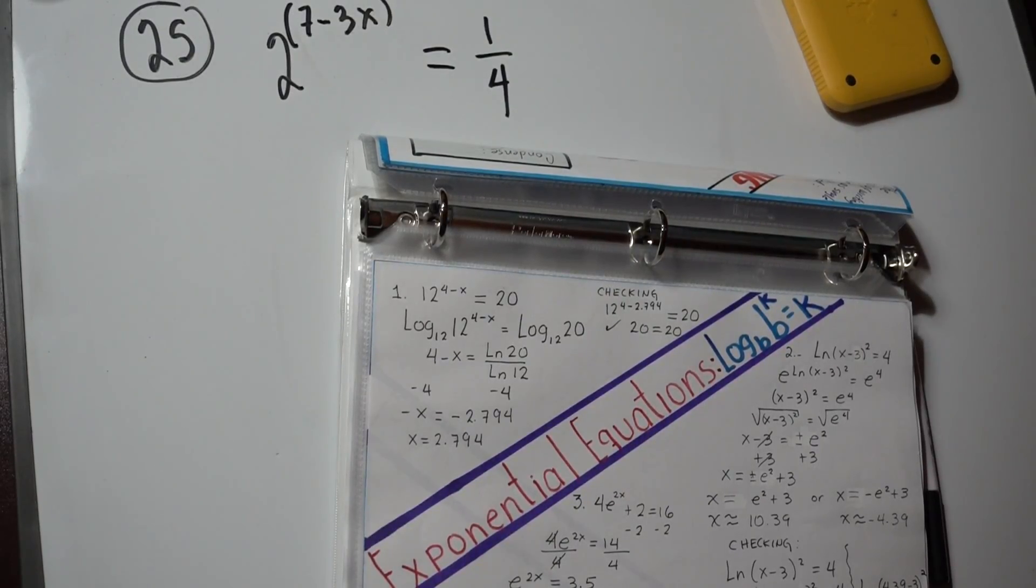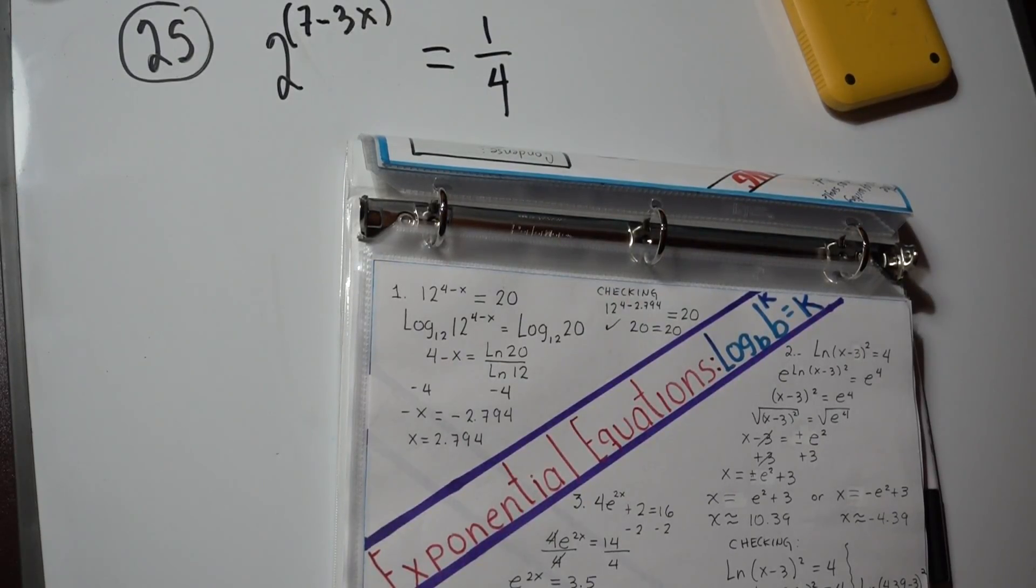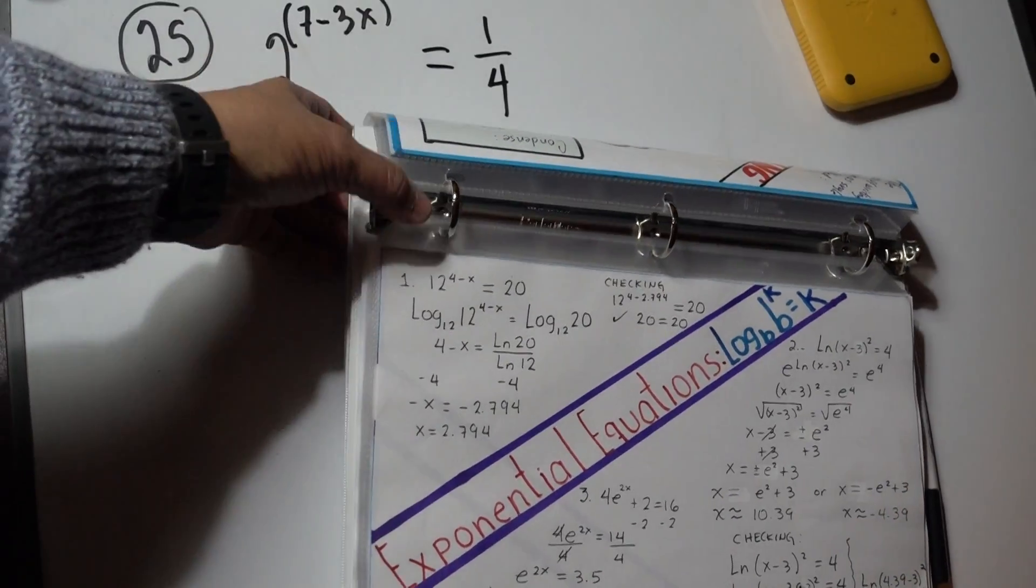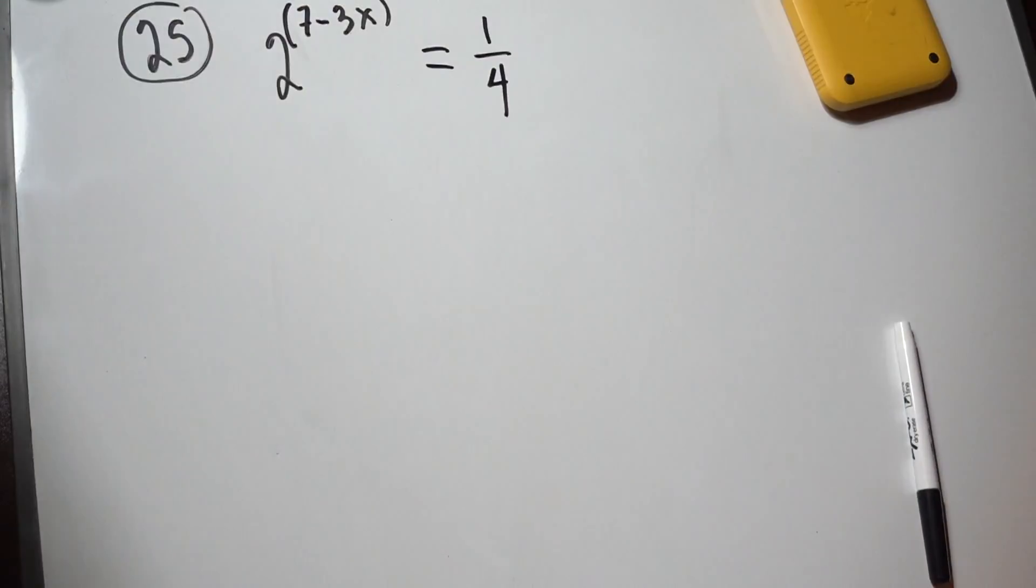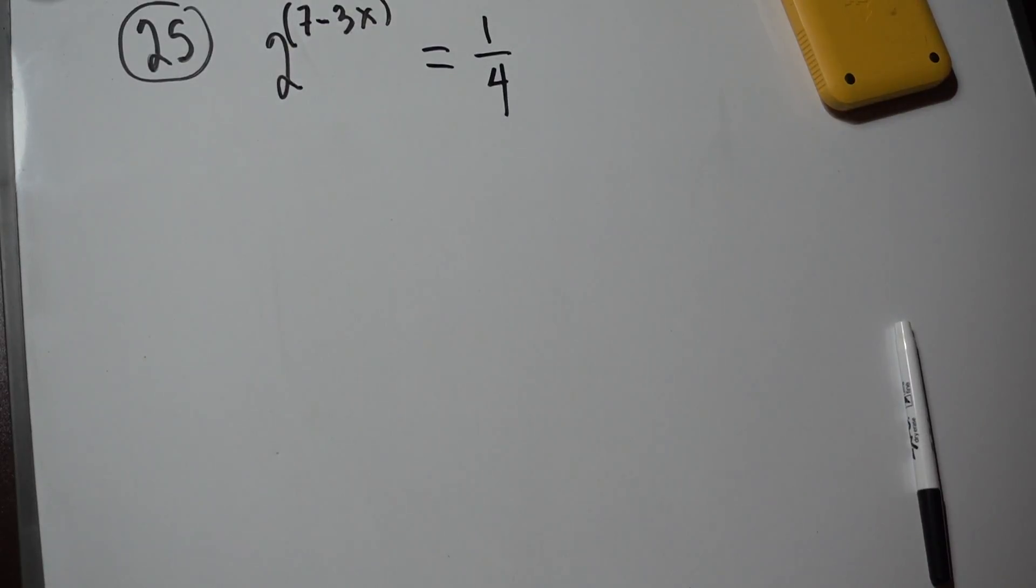This is number 25 from 25 through the end of review. We have a set of seven problems. These are exponential equations. This is from number 25: 2 to the 7 minus 3x equals one fourth, and we're trying to solve for x.